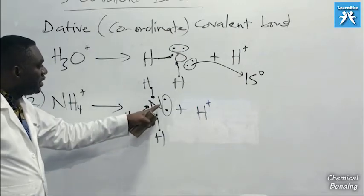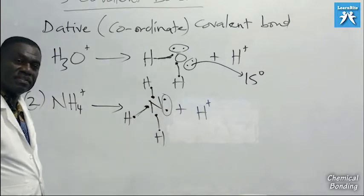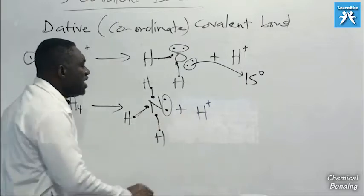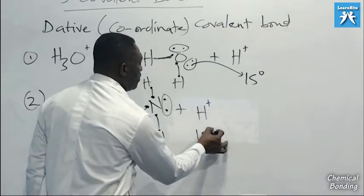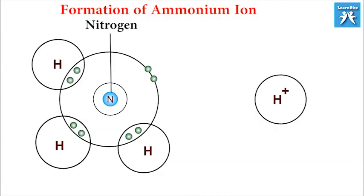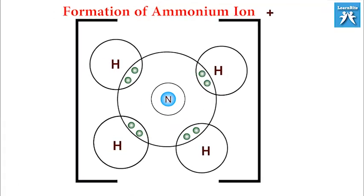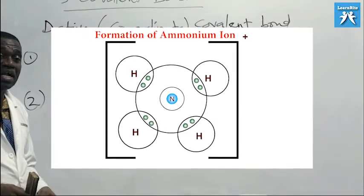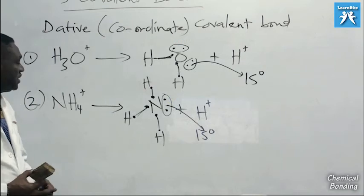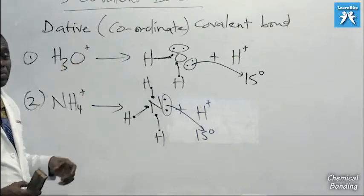Nitrogen in ammonia has a lone pair electron. The hydrogen ion (H+) again has a completely empty 1s orbital. So nitrogen can donate its lone pair electrons into the 1s orbital of the hydrogen ion. After sharing, they no longer have ammonia but instead form the ammonium ion (NH4+).